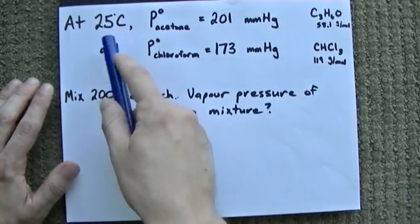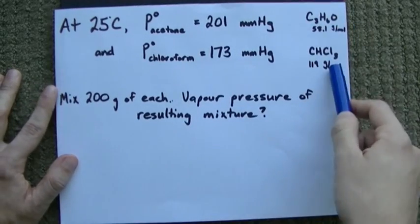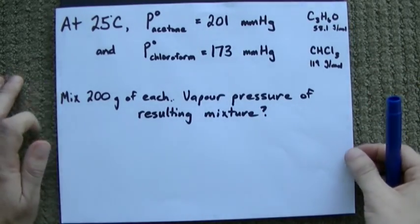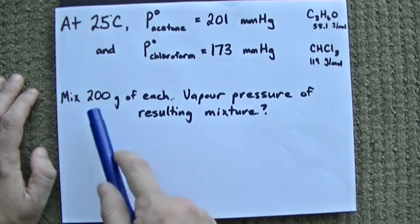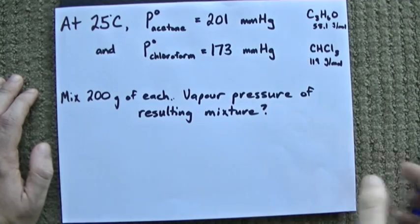So, at 25 degrees Celsius, we're given two vapor pressures, and I gave you the formulas and molecular masses so that you don't have to look those up yourself right now. If we have 200 grams of each in a beaker, what's the vapor pressure of the mixture together?